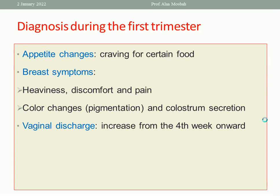Also there are some breast symptoms, like heaviness, pain, discomfort, and color changes in the form of pigmentation around the nipple and areola, and colostrum secretion. Also, vaginal discharge increases gradually from the fourth week onward.